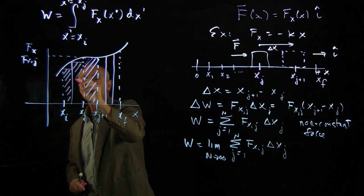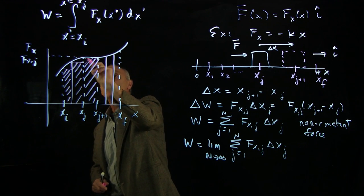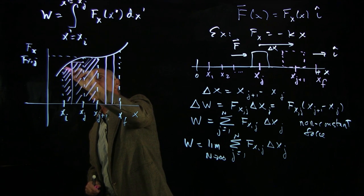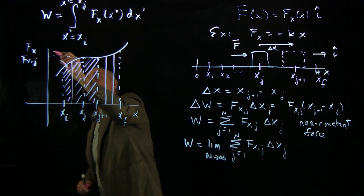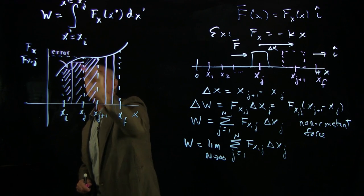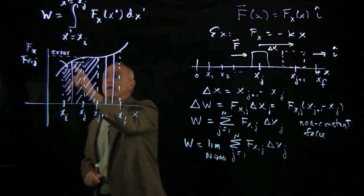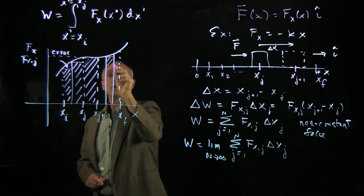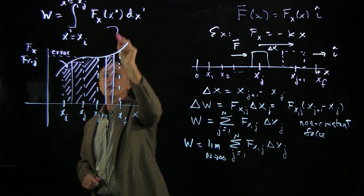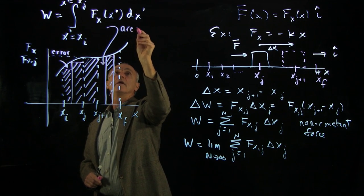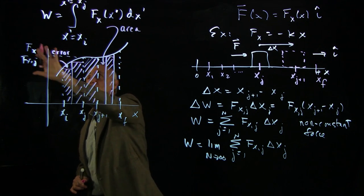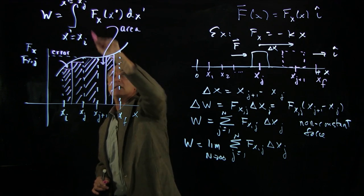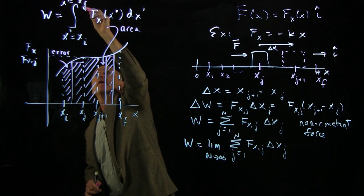You can see graphically that there's very little error when the function was nearly constant. But in this position where the function is growing, this represents our error. However, in the limit as n goes to infinity, we can make that error go vanishingly small. So once again, we see as a geometric interpretation that this is the area under the curve of the force versus position between the initial x_i and the final x_f.